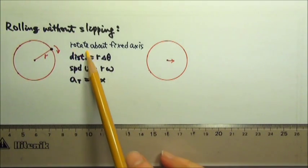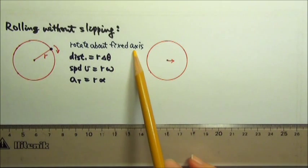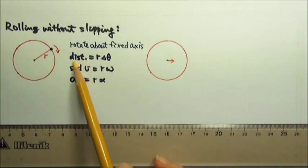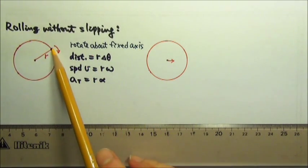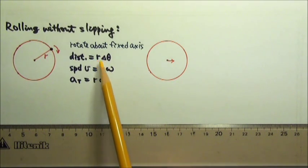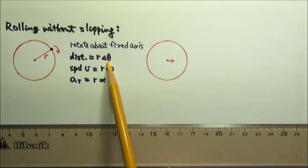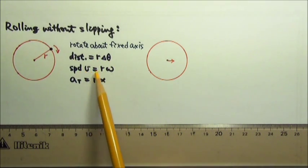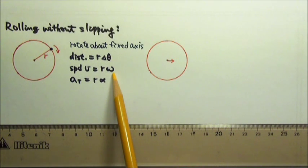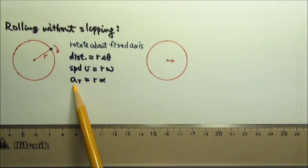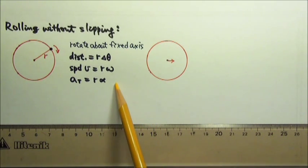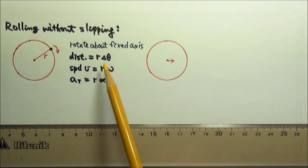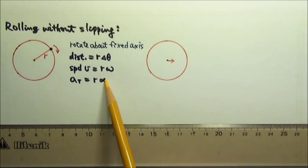When an object rotates about a fixed axis, the distance traveled by a point on the rim equals r times delta theta, and the speed equals r times omega, and the tangential acceleration equals r times alpha. Of course, these are only true if the angles are in radians.